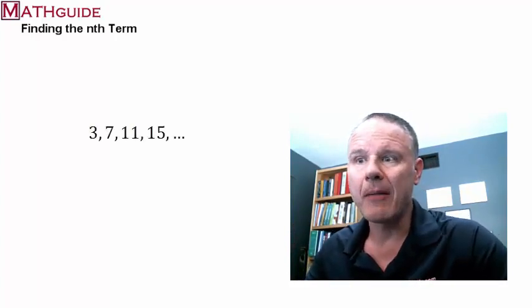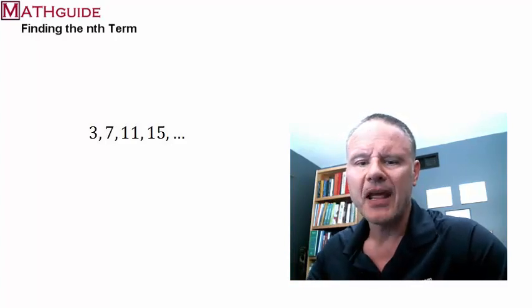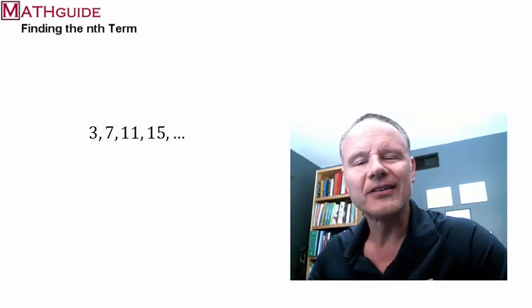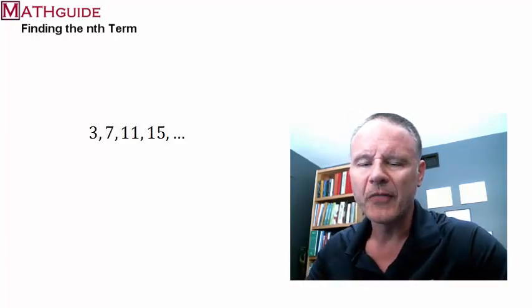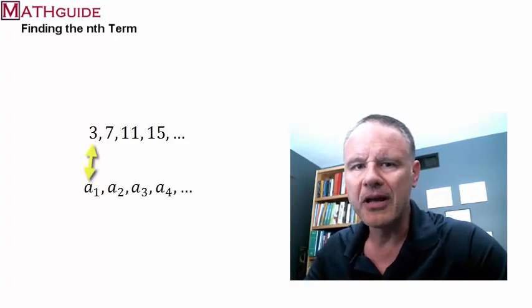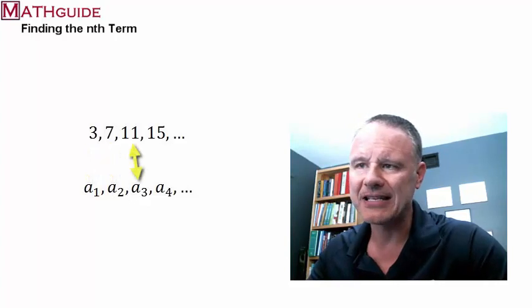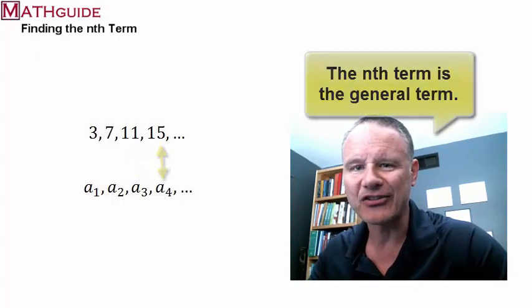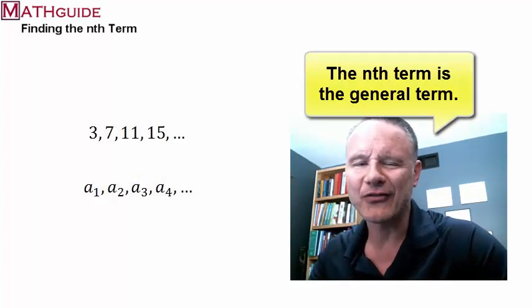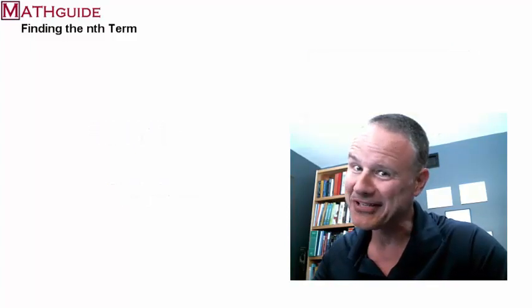A sequence is just a string of numbers all separated by commas. So, basically, it's a set of numbers. And when you're looking at the notation and trying to figure out how does the notation work, we call the first term a sub 1, the second term a sub 2, third term a sub 3, and so on, until we get up to the nth term. The nth term is the general term. It stands for any term in the sequence of numbers.